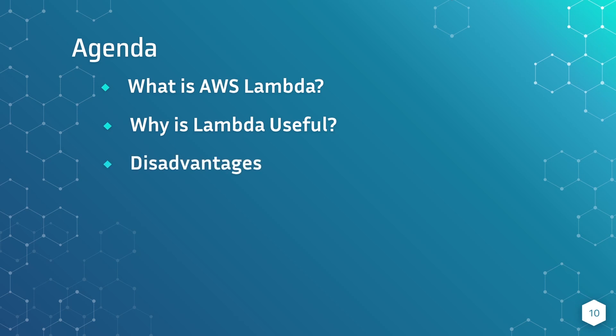Our next topic is going to be about some of the disadvantages. Lambda is a tool, and like all tools, sometimes a tool is not suitable for a specific job. Lambda is no different here — there's a good time and sometimes a poor time to use AWS Lambda. And then finally, we're just going to look at who uses AWS Lambda, taking a look at some case studies of companies you may recognize that are leveraging Lambda in their day-to-day workflows.